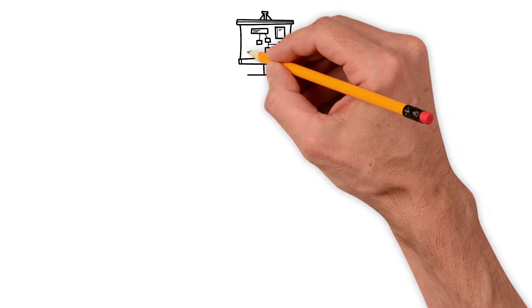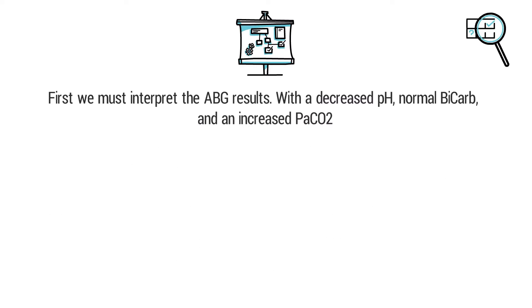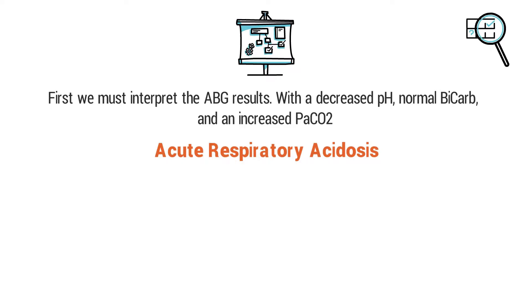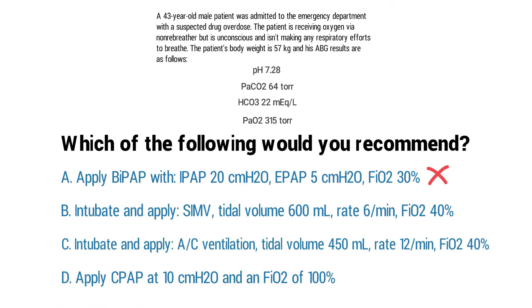Let's break it down and see if we can come up with the correct answer. First we must interpret the ABG results. With a decreased pH, a normal bicarb, and an increased PaCO2, this tells us that the patient is in acute respiratory acidosis. This, along with the other information gathered in the question, lets us know that the patient is in need of full invasive ventilatory support. So that means we can rule out A and D automatically, because BiPAP and CPAP are forms of non-invasive ventilation.